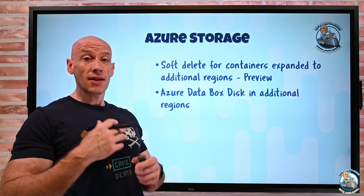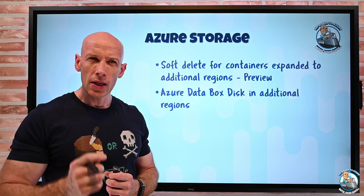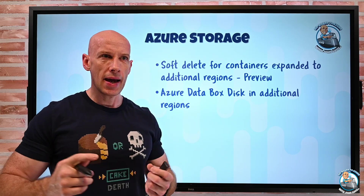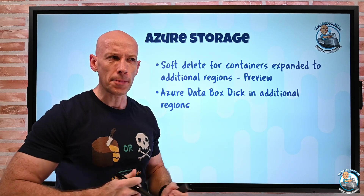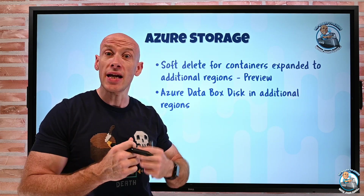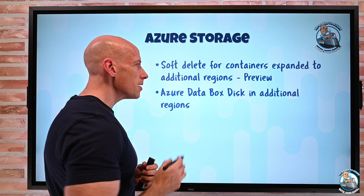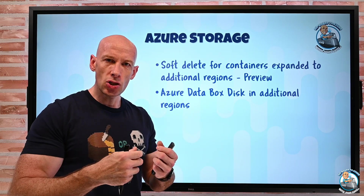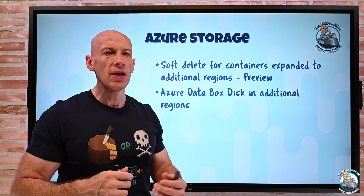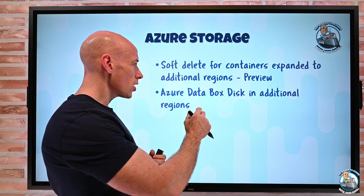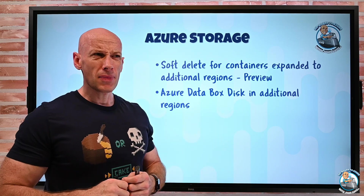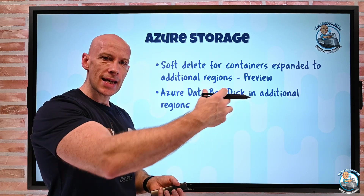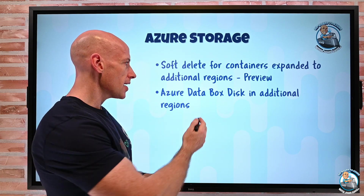Azure Data Box Disk is now available in additional regions — South Africa and China. Data Box is all about sending or receiving data offline. If I have a big database on-premises and don't have enough bandwidth or time to send it over the network, there's a whole set of Data Box offerings. Data Box Disk is the smallest — it's an encrypted disk. I copy my data to it, send it back to an Azure data center, and they bring it into Azure Files or Azure Blob. There's also Azure Data Box, a full appliance, and Azure Data Box Heavy with around 770 terabytes of usable space.